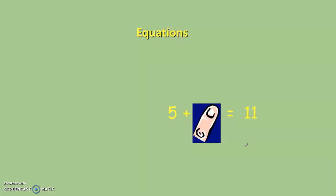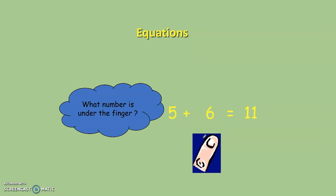Example number one, five plus what is equal to 11. So if I was to move this finger out of the way, what would be underneath? What do I add to five to get to 11? Six is what would be underneath it. Five plus six makes 11. It's balanced out my equation here. Both sides are equal to the same amount. This side is equal to 11 and this side is also equal to 11.